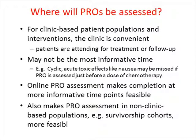The next thing to think about is where will your PROs be assessed. If you're doing a clinic-based study, the clinic is a very convenient place to assess PROs because patients are attending for treatment and follow-up. However, when they come to clinic might not be the most informative time. For example, if you've got cyclic acute toxic effects like nausea, you might miss them if you assess PROs just before the dose of chemotherapy, which is when the patient comes to clinic. Online PRO assessment is making completion at more informative times much more feasible, and it's also making PRO assessment in non-clinic-based populations such as survivorship cohorts more feasible. New technology is certainly very promising for giving us more flexibility about where PROs are assessed.